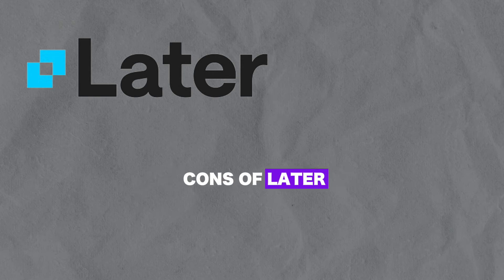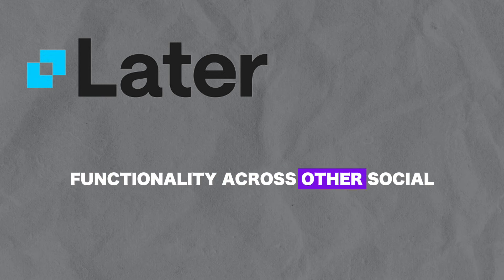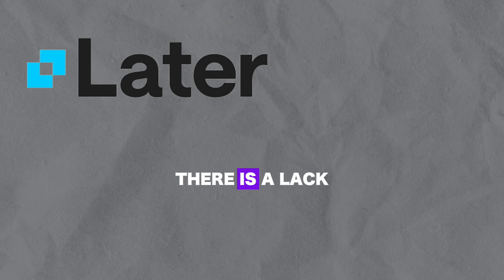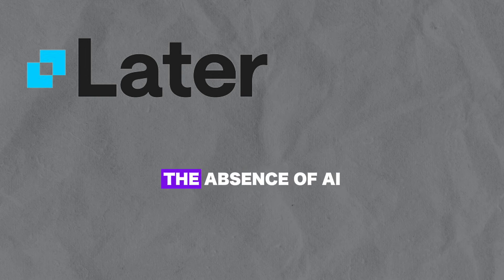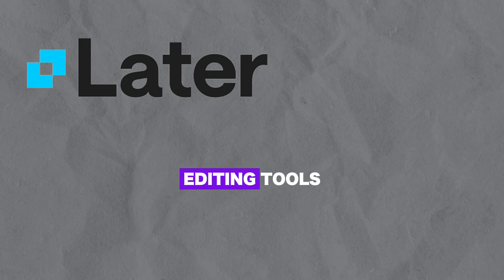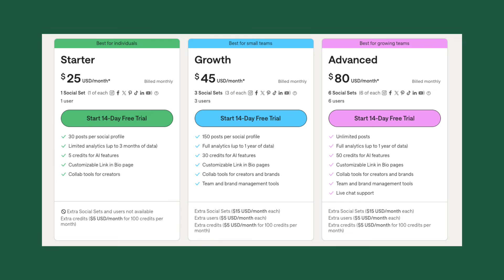The cons of Later include an emphasis on Instagram that may limit functionality across other social media platforms, a lack of direct social media interaction capabilities, and the absence of AI and graphic editing tools. Later has three plans: a starter plan at $25 per month for one user and one social set, a growth plan at $45 per month for three users and three social sets, and an enterprise plan available upon request.